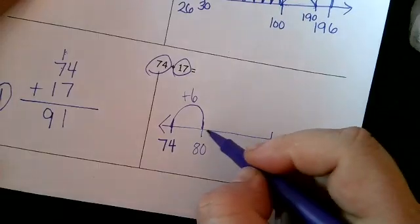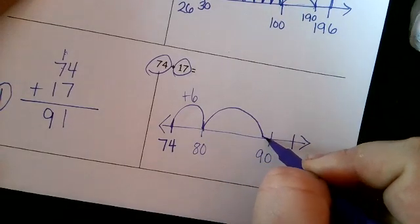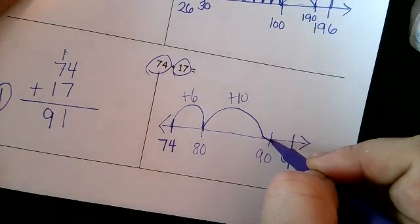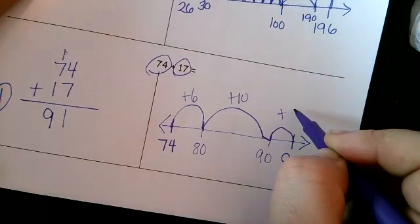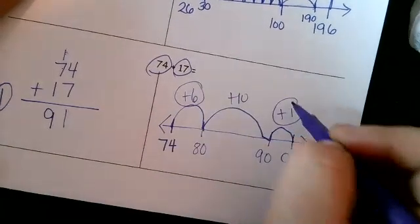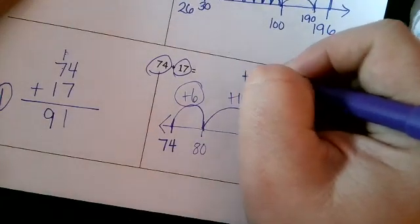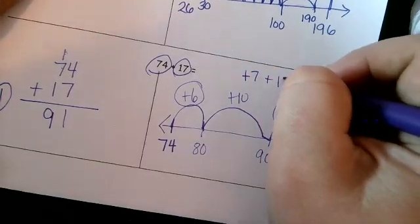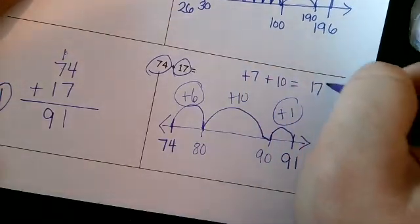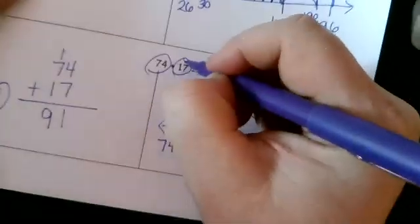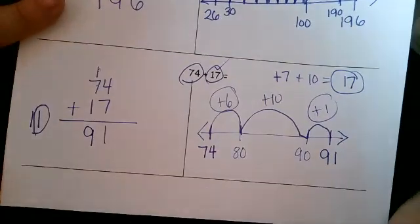91, the benchmark number before that would just be 90. To go from 74 to 80, well, that's 6. To go from 80 to 90, well, that's just a 10. And to go from 90 to 91, that's just a 1. Gather my ones together. 6 plus 1 is 7 and 10. That will equal 17. Does it match the other addend? Yes, it sure does. That's how I know I did it right.